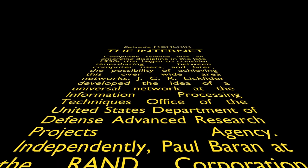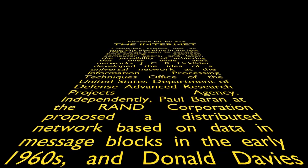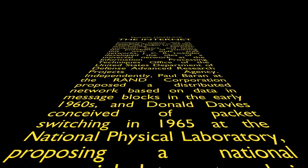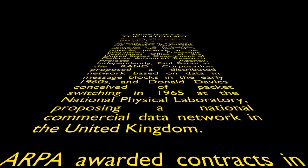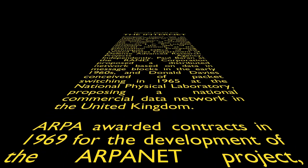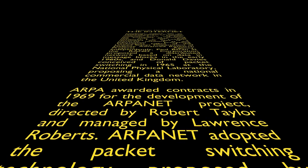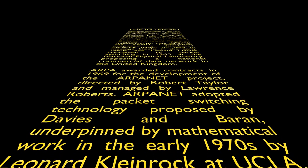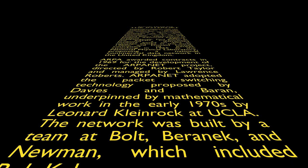Independently, Paul Baran at the RAND Corporation proposed a distributed network based on data and message blocks in the early 1960s, and Donald Davis conceived of packet switching in 1965 at the National Physical Laboratory, proposing a national commercial data network in the United Kingdom. The Advanced Research Projects Agency awarded contracts in 1969 for the development of the ARPANET project, directed by Robert Taylor and managed by Lawrence Roberts. ARPANET adopted the packet switching technology proposed by Davis and Baran, underpinned by mathematical work in the early 1970s by Leonard Kleinrock at UCLA. The network was built by a team at Bolt, Baranek, and Newman, which included Bob Kahn.